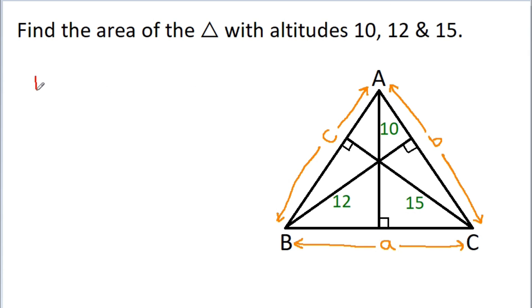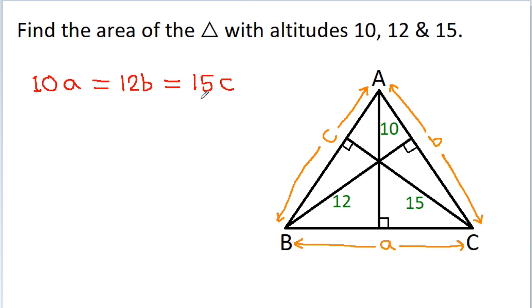So here we get 10 times A is equal to 12 times B is equal to 15 times C, and the LCM of 10, 12 and 15 is 60. So I am assuming these are all equal to 60 times some constant k.